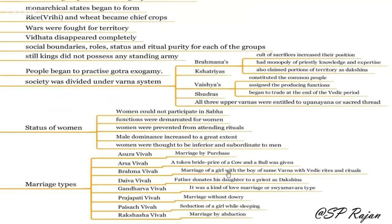Daiva Vivaha means a father donates his daughter to a priest as dakshina — this later developed into the Devadasi system and led to temple prostitution. Gandharva Vivaha means pure love marriage or Swayamvara. Prajapati Vivaha means marriage without dowry — you reject dowry. Paisachi Vivaha means seducing a girl while she is sleeping and marrying her. Rakshasa Vivaha means abducting a girl and marrying her.